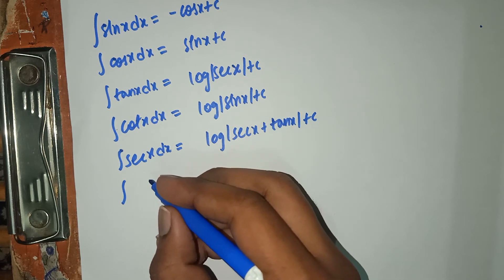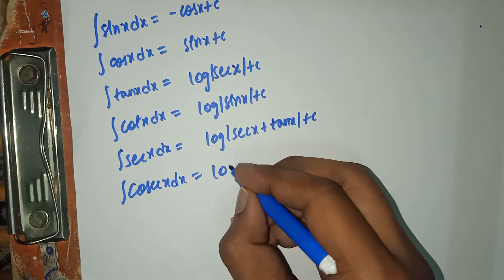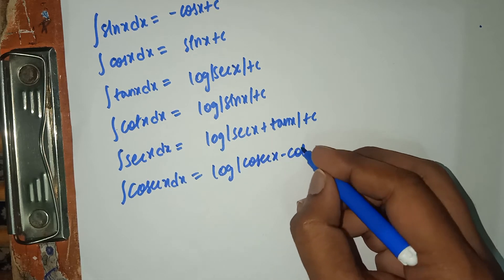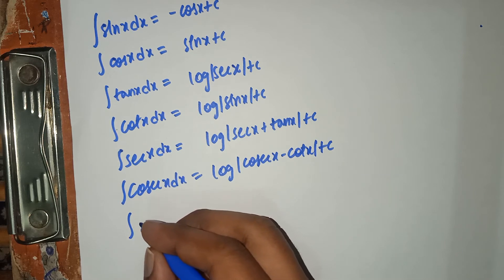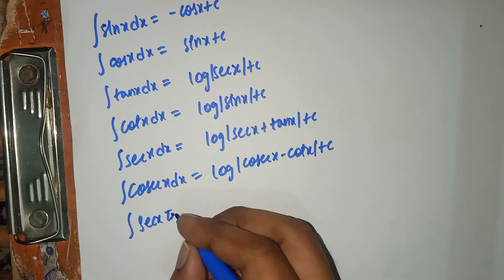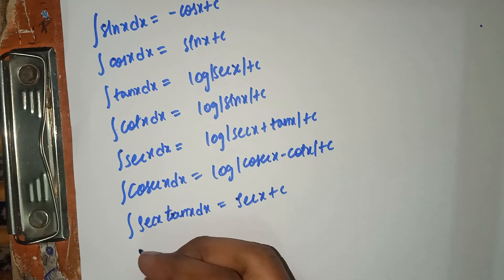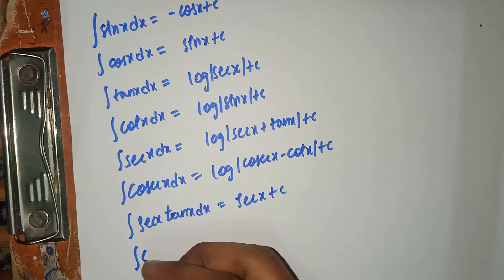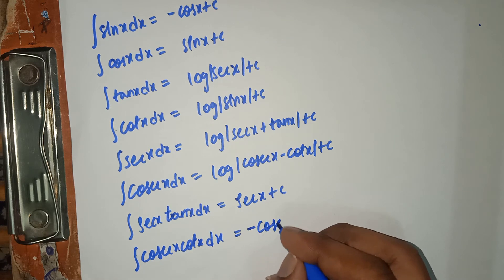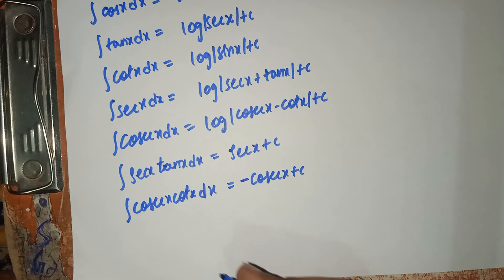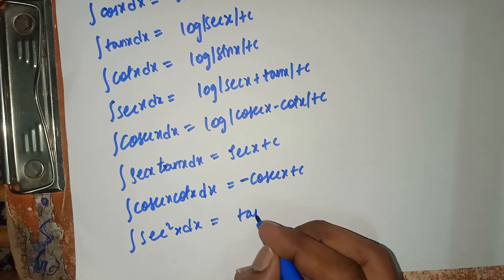Just see them and read twice — you will remember it. Integral of cosecant x dx equals log mod cosecant x minus cot x plus C. Integral of sec x tan x dx equals sec x plus C. Integral of cosecant x cot x dx equals minus cosecant x plus C. Integral of secant square x dx equals tan x plus C.